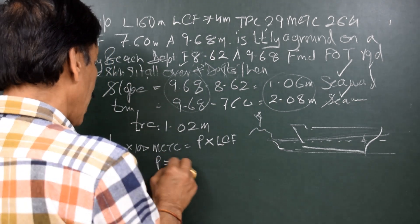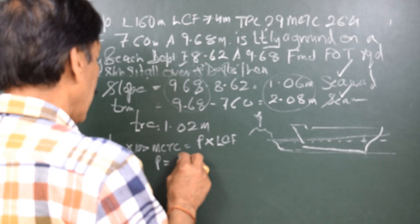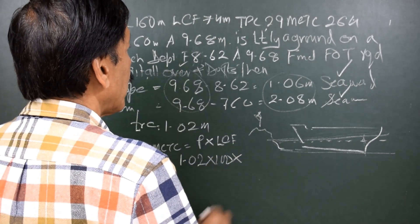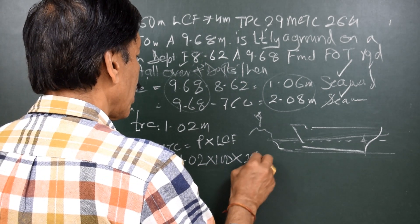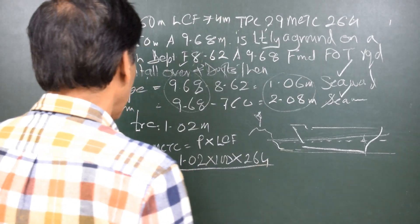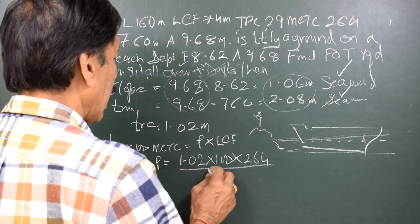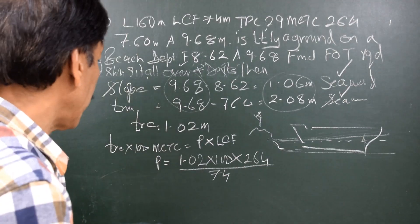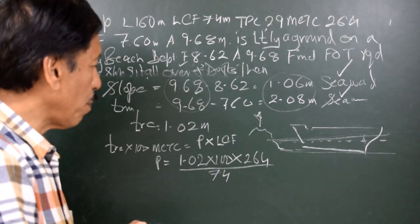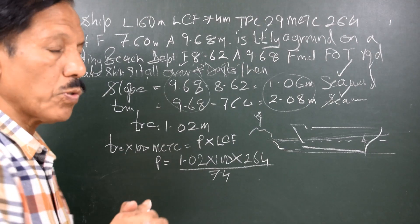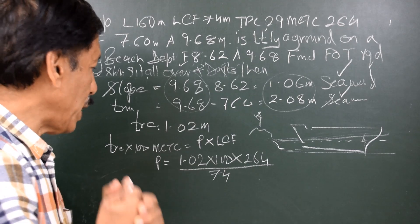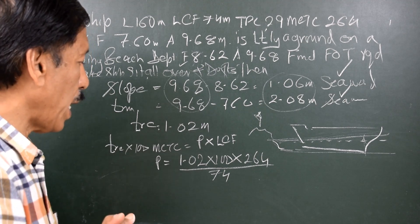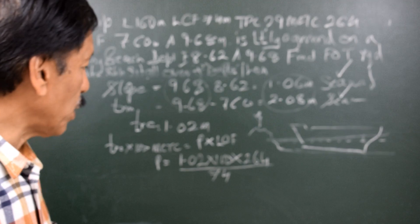So P therefore is equal to 1.02 into 100 into MCTC that is 264 divided by LCF, 74 meters. So here we have P into LCF is equal to trim change into 100 MCTC. So P is equal to 100 MCTC into trim change divided by LCF.